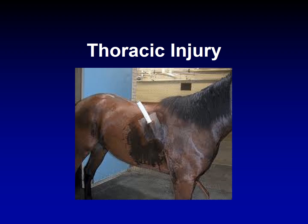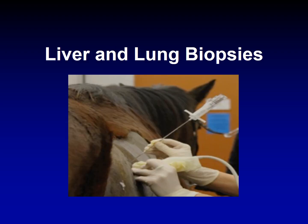First, we will consider a case like this. If you're faced with such a case in the clinic, you better know the anatomy of the thorax — where the extent of this bar going into the thoracic cavity is and what organs this wood piece might be injuring. We also frequently perform liver and lung biopsies in equine, which is very important to diagnose liver diseases and respiratory diseases. So it's pretty important to study the anatomy of the equine thorax.